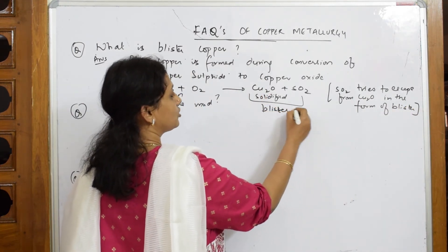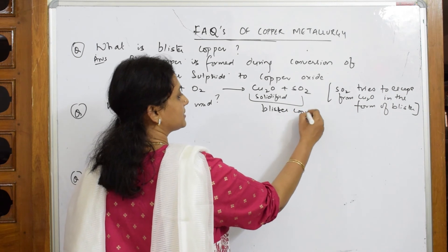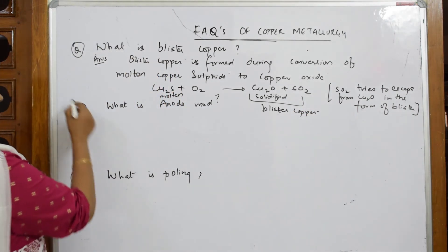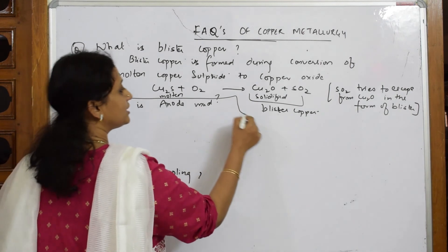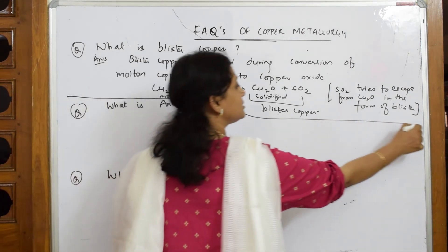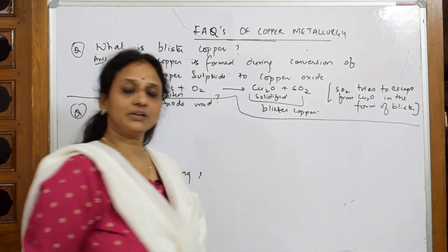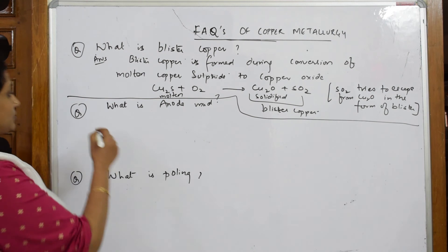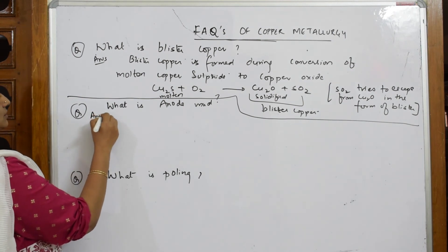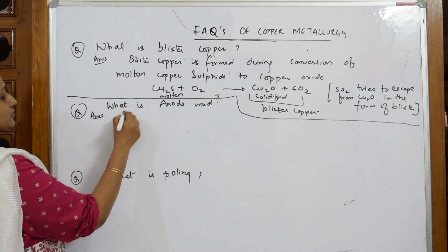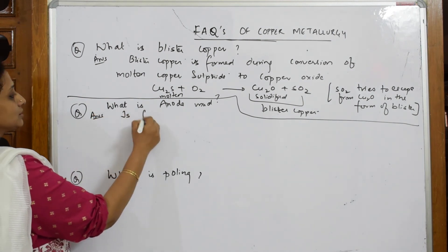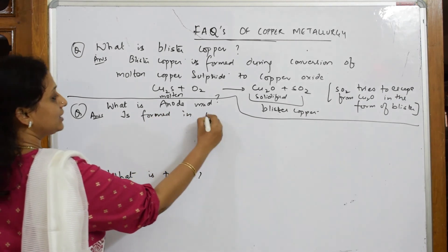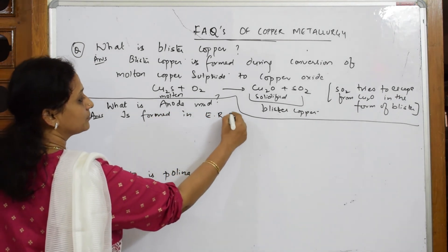Sulfur dioxide tries to escape from copper oxide in the form of blisters, and it is called blister copper, which is 98% pure. Now, what is anode mud? Anode mud is discussed in the context of electrolytic refining of copper.